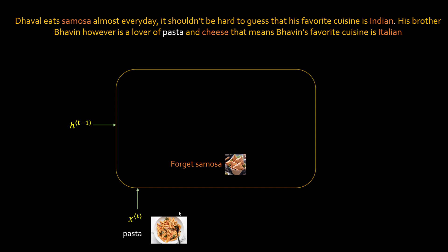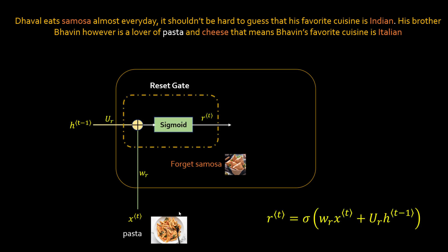In GRU, when 'pasta' comes, you want to forget about 'samosa,' and this is handled using a reset gate. The reset gate takes the hidden state H(t-1) and the current word X(t), and performs a mathematical operation — a weighted sum with a sigmoid activation applied on top — and the value R(t) that you get is your reset gate value.